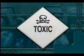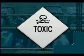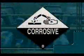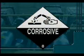A toxic chemical attacks your internal organs, causing extreme illness or even death. Contact with toxic chemicals should be avoided completely by using the appropriate personal protective equipment. A corrosive chemical will destroy living tissue upon contact, resulting in chemical burns and scarring. Avoid skin and eye contact with corrosive chemicals by using gloves and safety goggles.